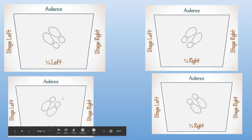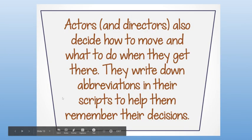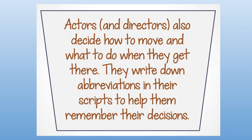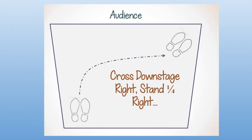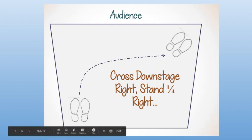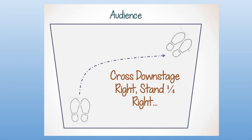Actors and directors also decide how to move and what to do when they get there. They write down abbreviations in their scripts to help them remember their decisions. So we have cross downstage right, stand quarter right. So that means I'm gonna walk across the downstage right, stand a quarter turn right. This is what is called blocking. Blocking is what we write out to determine where you're going to be on the stage.